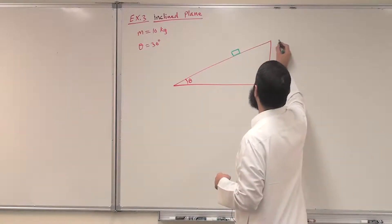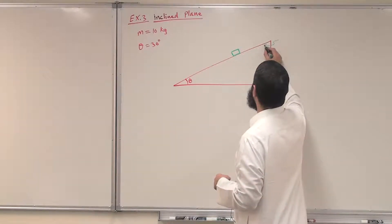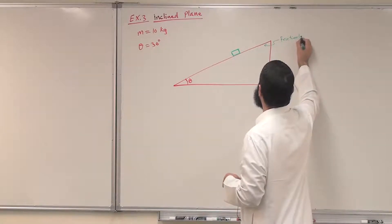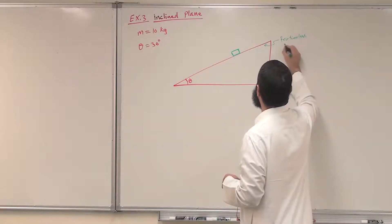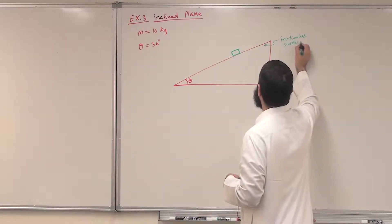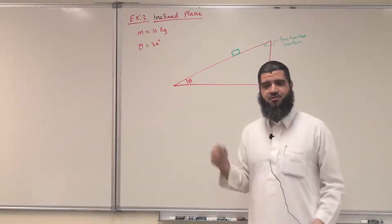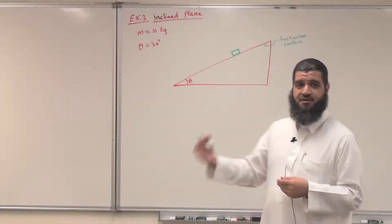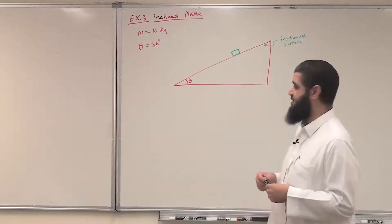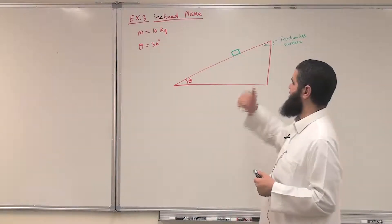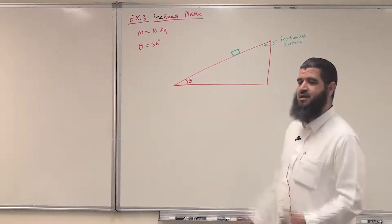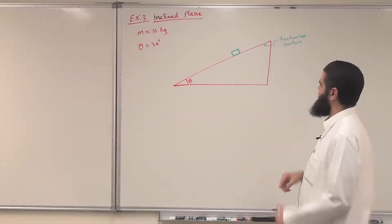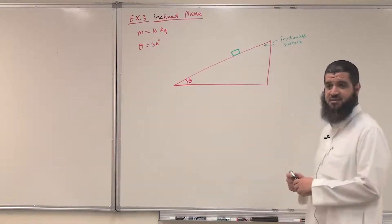We'll start with the surface being frictionless, so there is no friction or we ignore the friction force here. Later on, we will discuss the same example but when we have a rough surface, friction force will be present there.